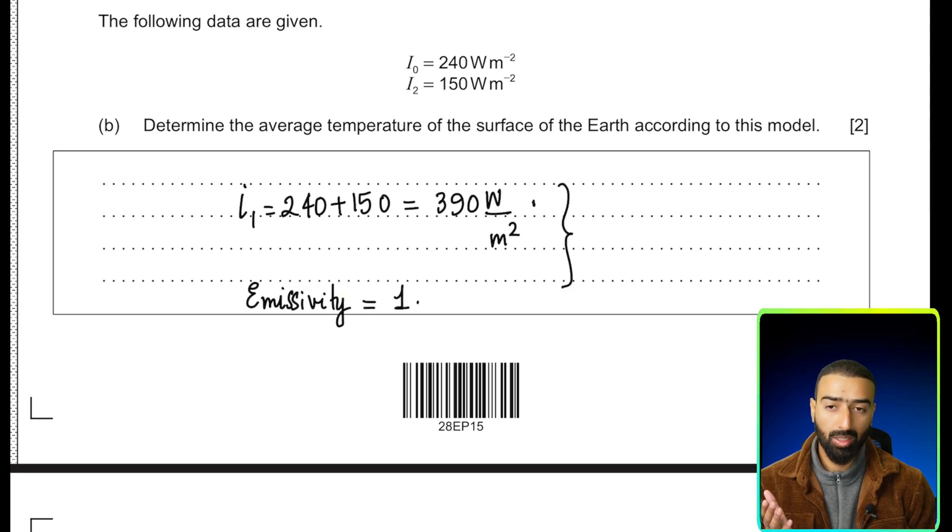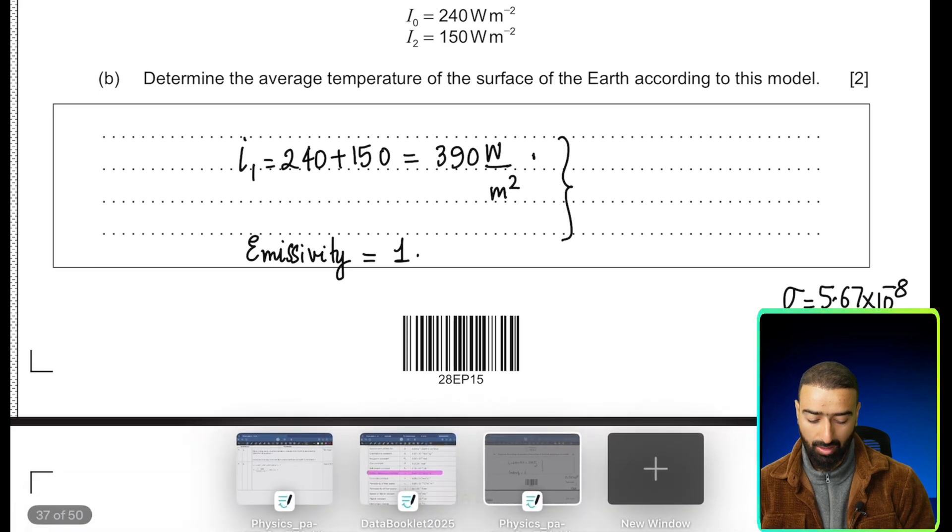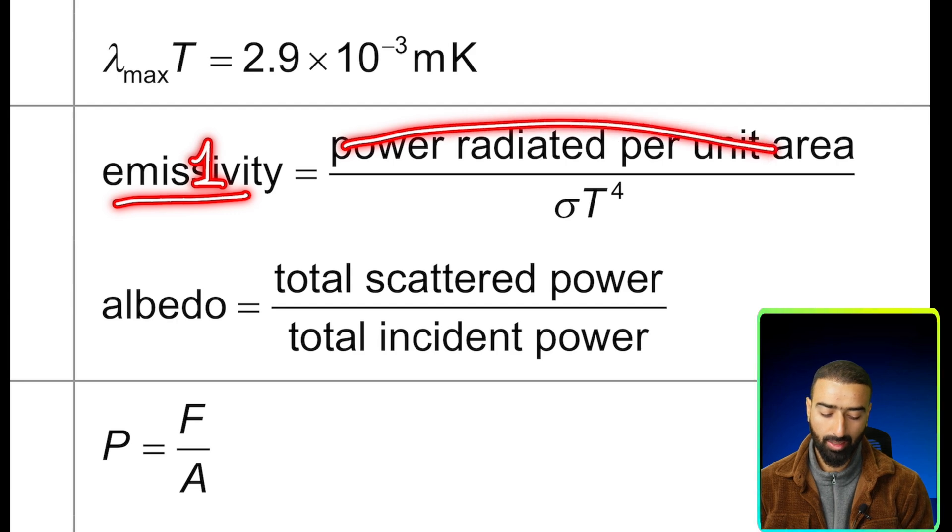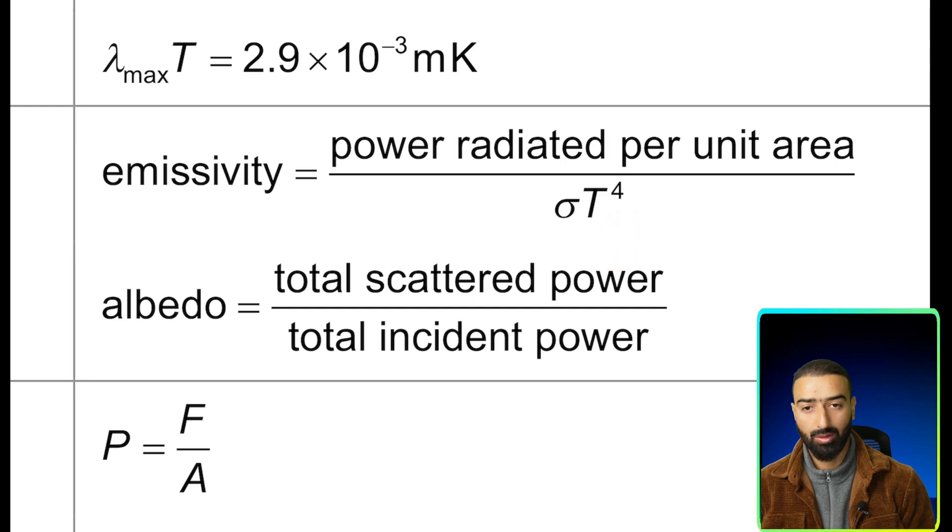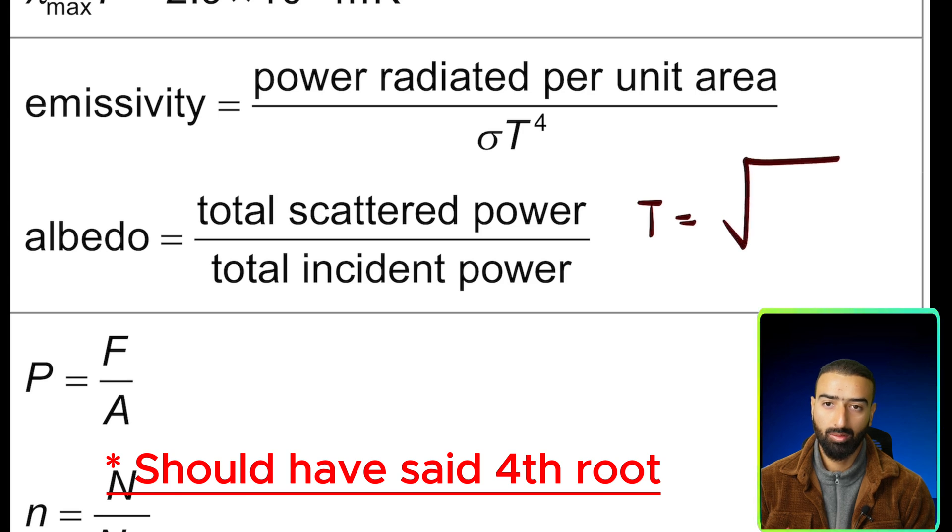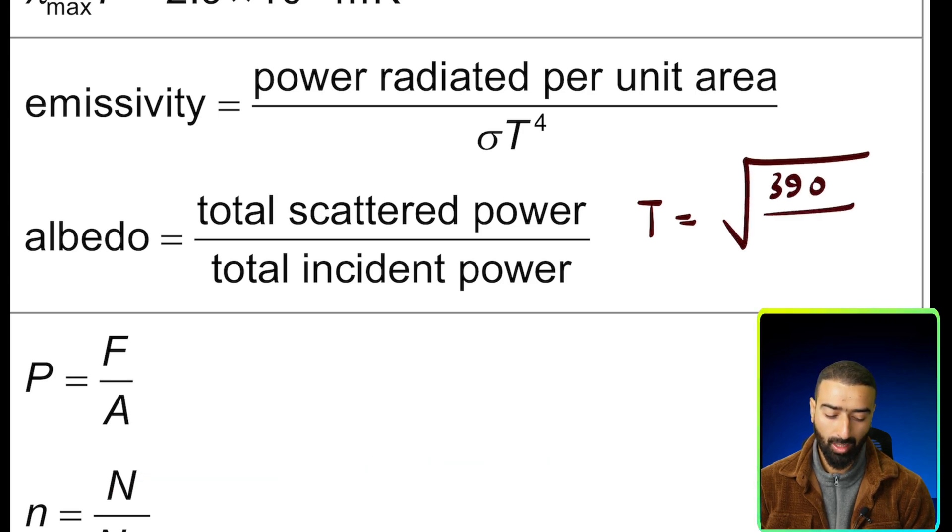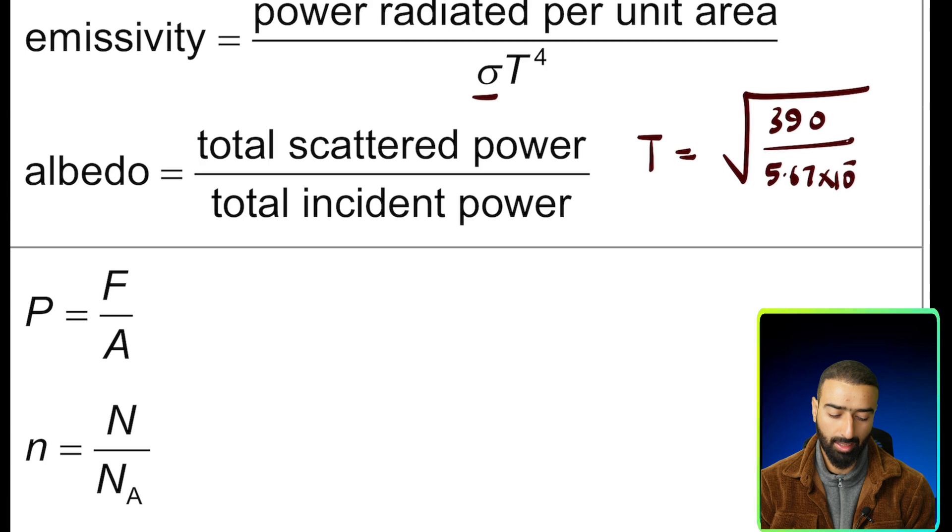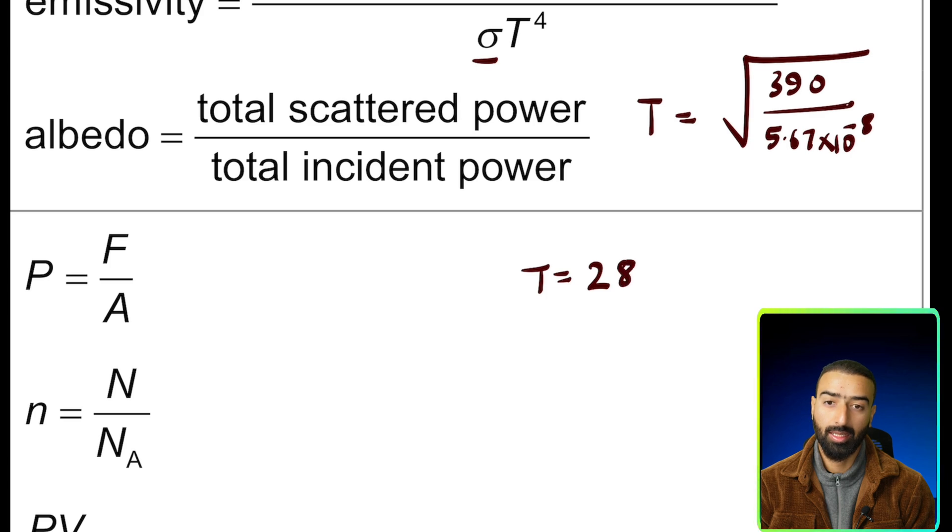We can use this information and plug this into an equation in our data sheet. We know the emissivity, it's 1. We know the total power radiated, it's 390. We just need to rearrange this equation for temperature. If we do that, we get a value of T equals the fourth root of 390 divided by the Stefan-Boltzmann constant, that's sigma. The value of sigma is 5.67 times 10 to the minus 8. If we solve this, we get a value of about T equals 288 Kelvin. That solves this problem.